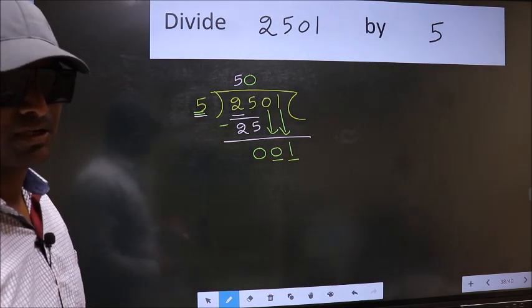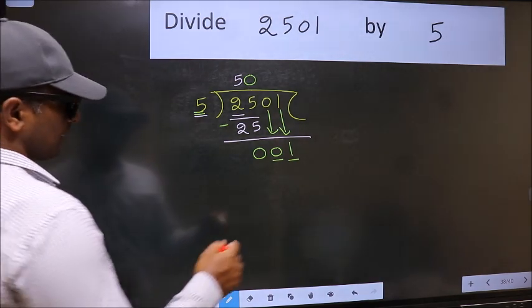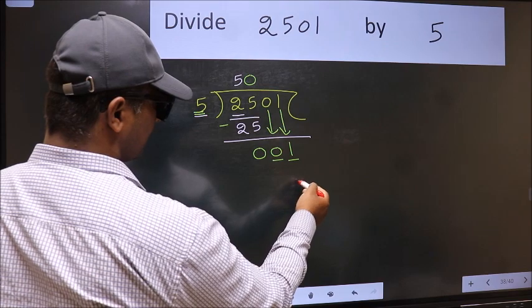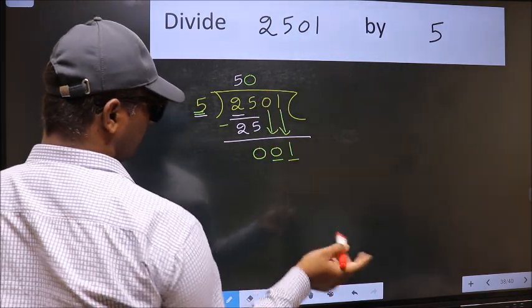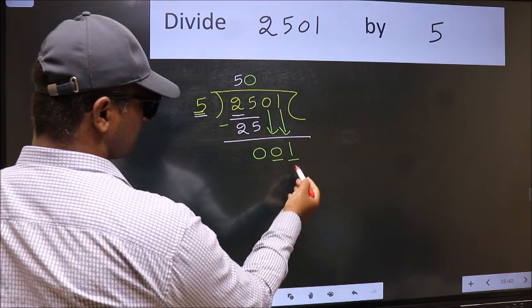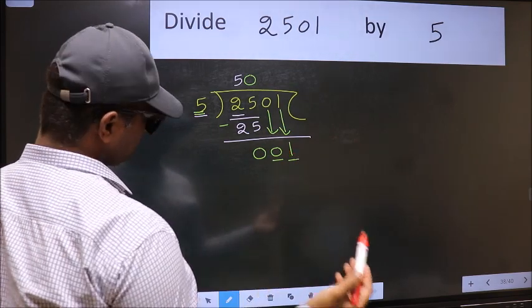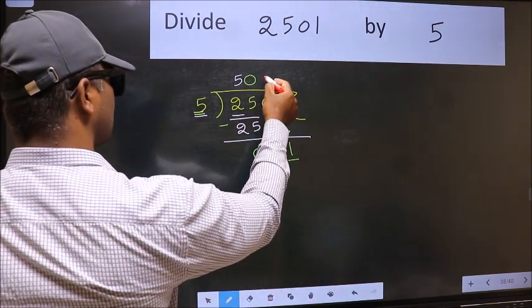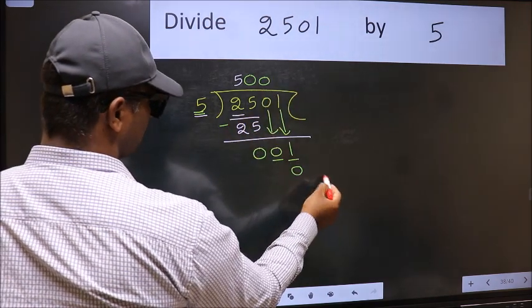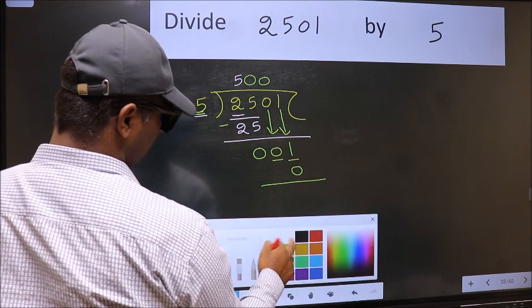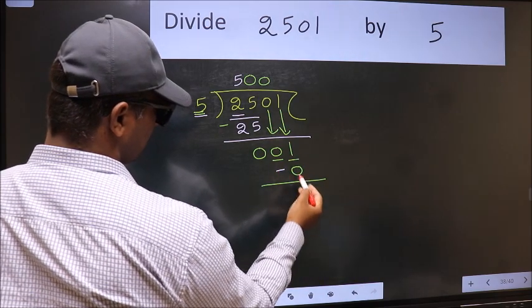Instead, what you should think of doing is which number should we take here? If I take 1, we will get 5, but 5 is larger than 1. So what we should do is we should take 0. So 5 into 0 is 0. Now we should subtract: 1 minus 0 is 1.